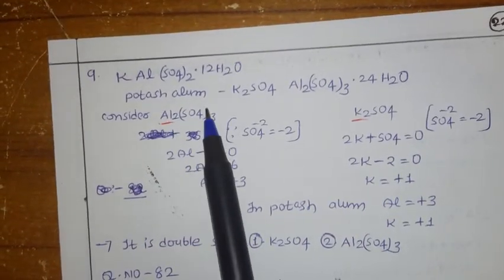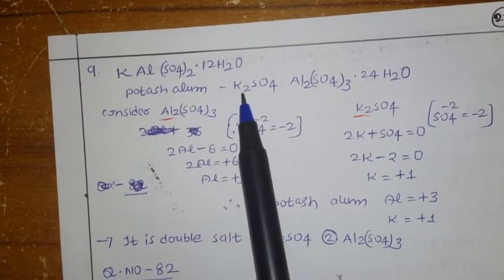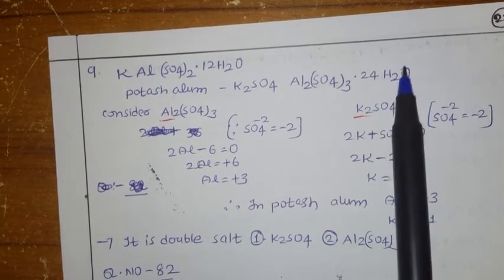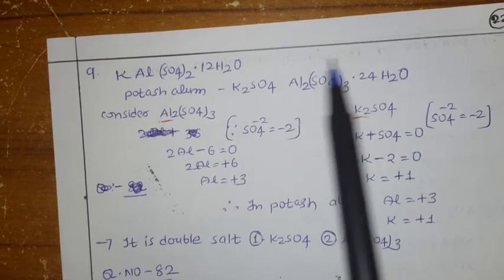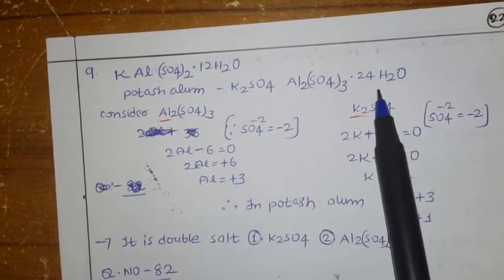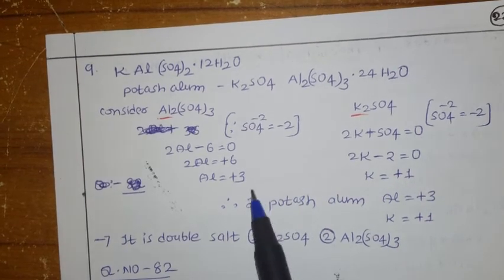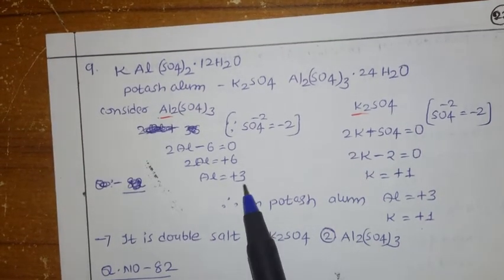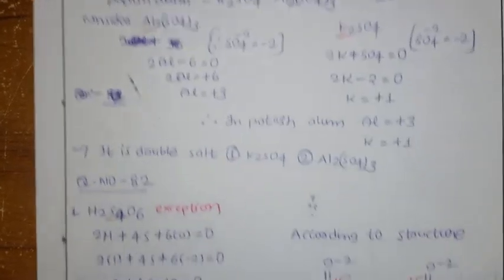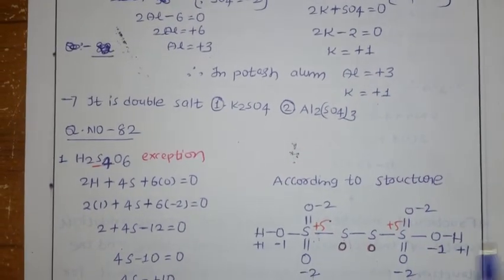Another example from the textbook: potassium alum, K2SO4·Al2(SO4)3·24H2O. In this, potassium oxidation number is plus 1 and aluminium is plus 3. You have to work out the calculation — all these examples are present in the textbook.